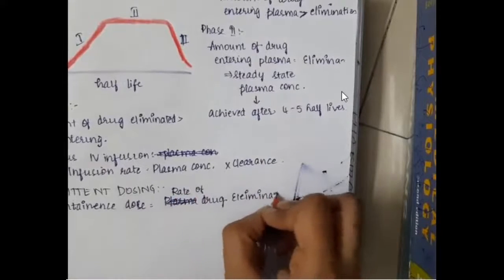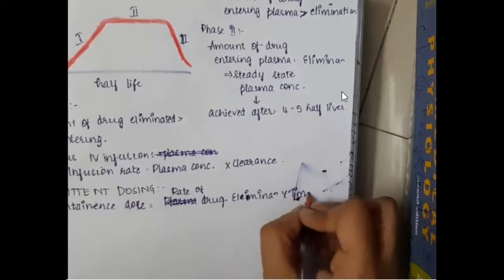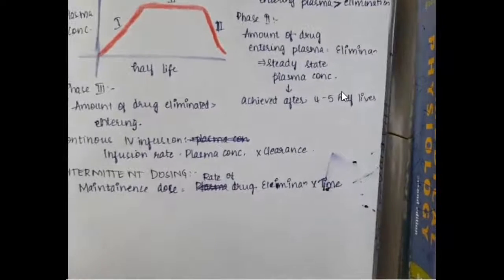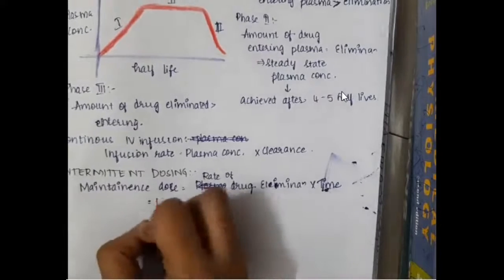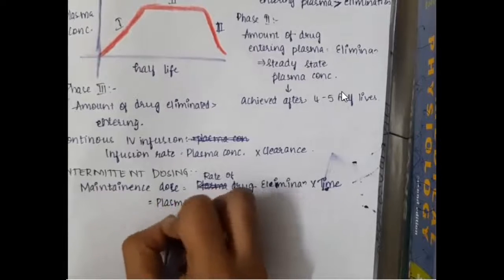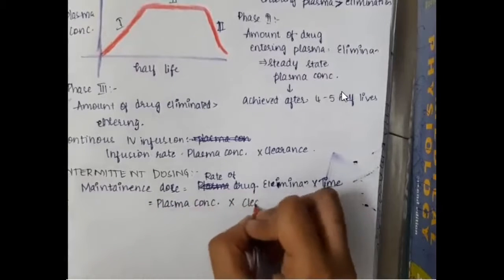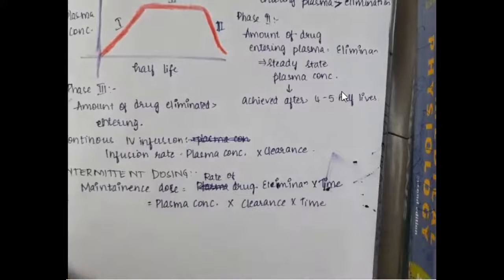Maintenance dose is the rate of drug elimination multiplied by time — you replace the drug that is eliminated so the steady state is maintained. Maintenance dose equals plasma concentration multiplied by clearance multiplied by time.